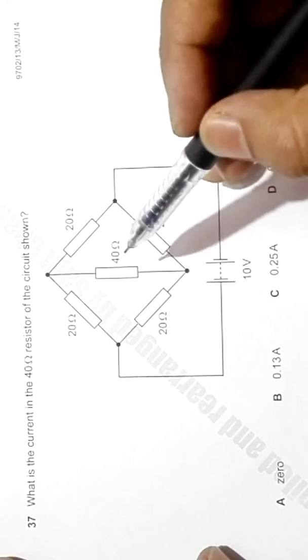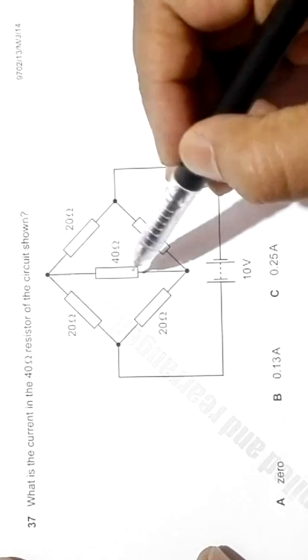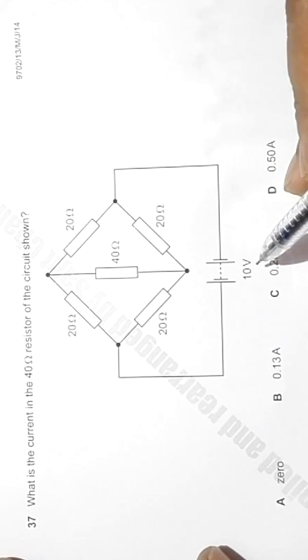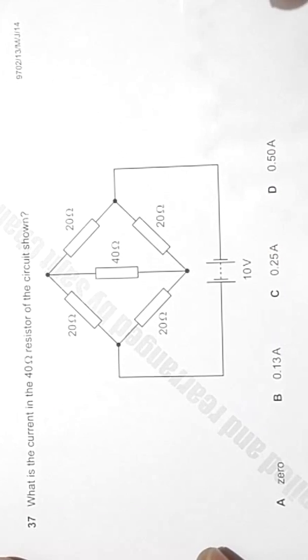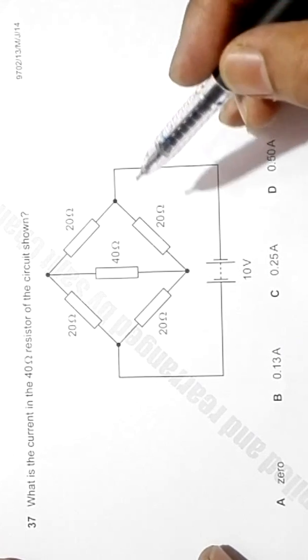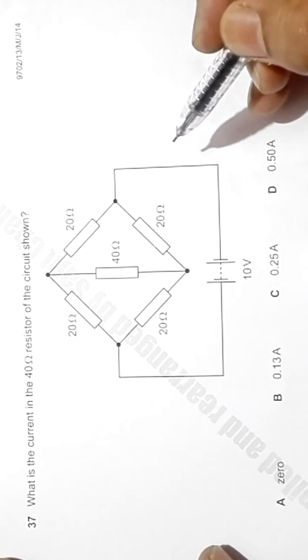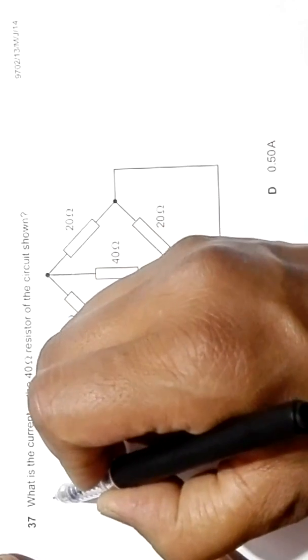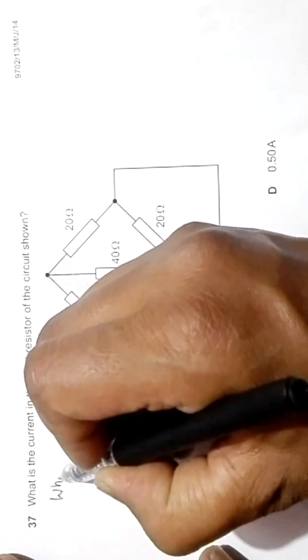We have a 40 ohm resistor in the middle and a power source of 10 volt. By the format of this arrangement, we can say that this is our Wheatstone bridge.